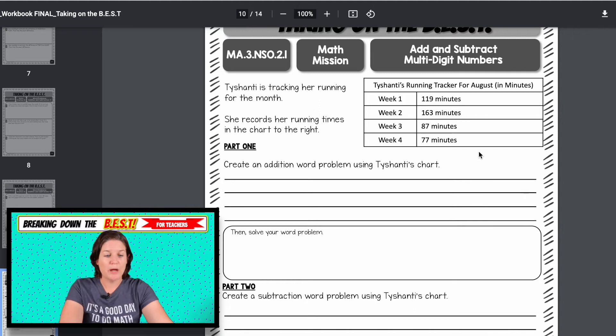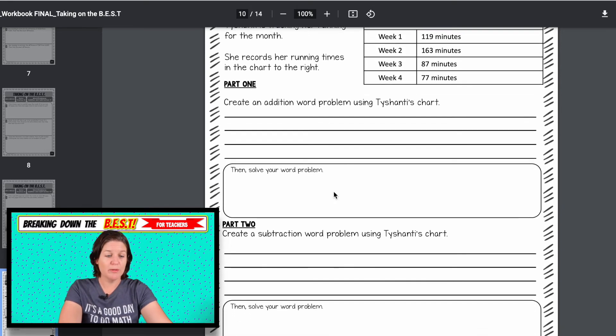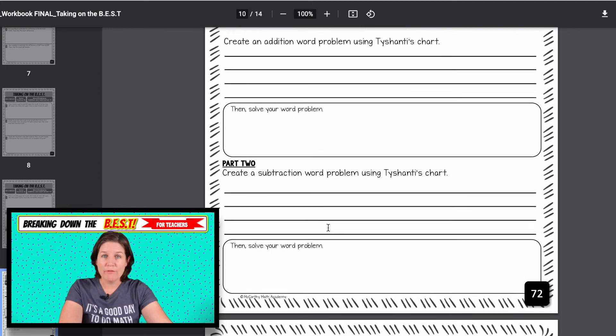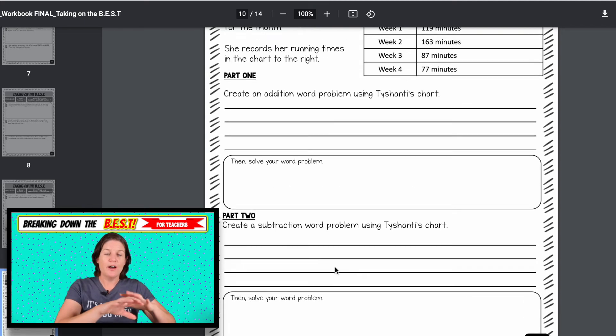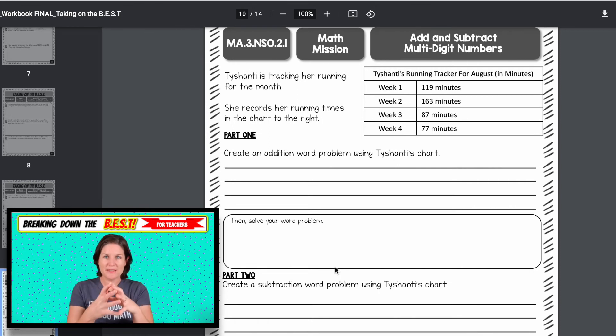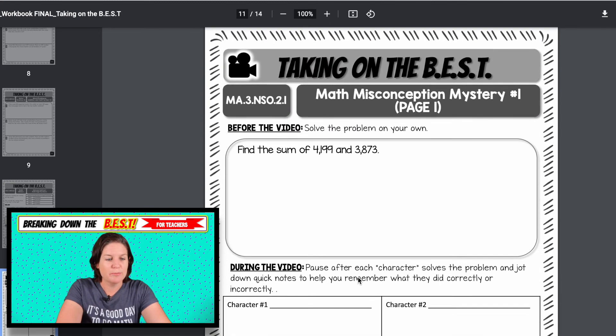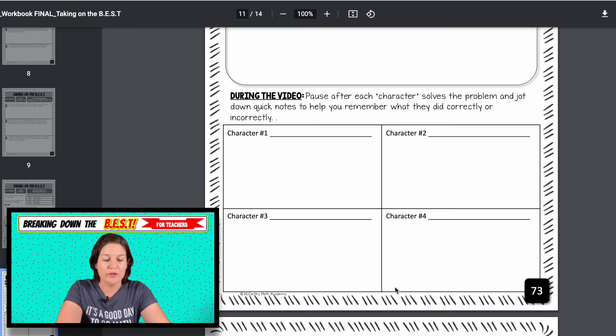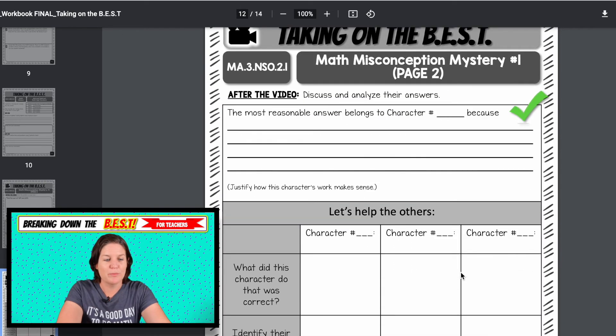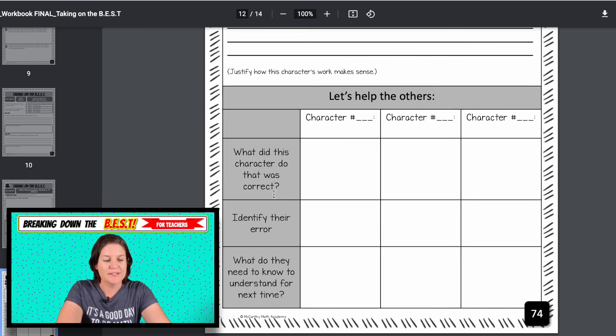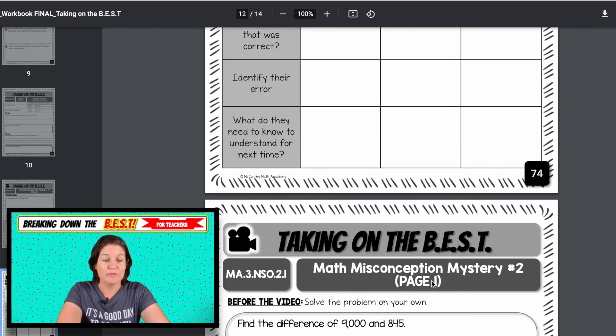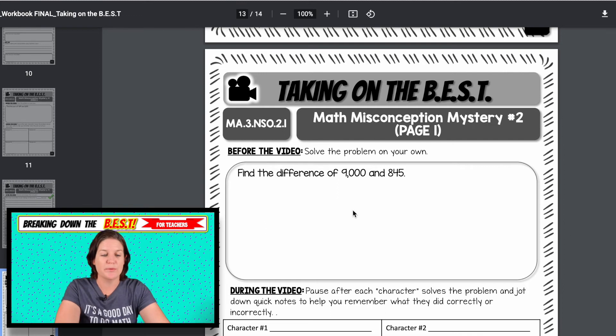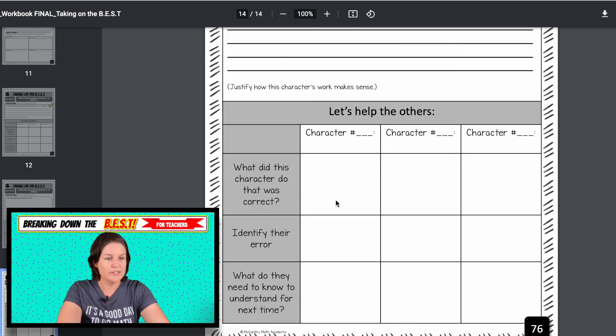Okay. Then we have a math mission with some data. It says that part one, they have to create an addition word problem using the chart, then solve the problem, create a subtraction word problem, then solve the problem. So the math missions are awesome because they take all these skills of the standard. They kind of combine them together and really get the kids thinking, which we all love. And then this is the math misconception mystery problem for the first one is finding the sum. So there's four characters. One of them will solve it correctly. The other three will not. And this is the report page. What did these characters do that was correct? What was their error? What do they need to know for next time? And then you have two of them for this because we're adding and subtracting. So here's one with subtraction.